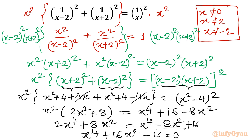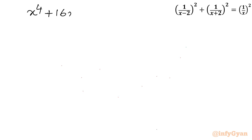So instead of the original rational equation, it is easier to solve this quartic equation: x to the power 4 plus 16x squared minus 16 equals 0. Let's solve it.